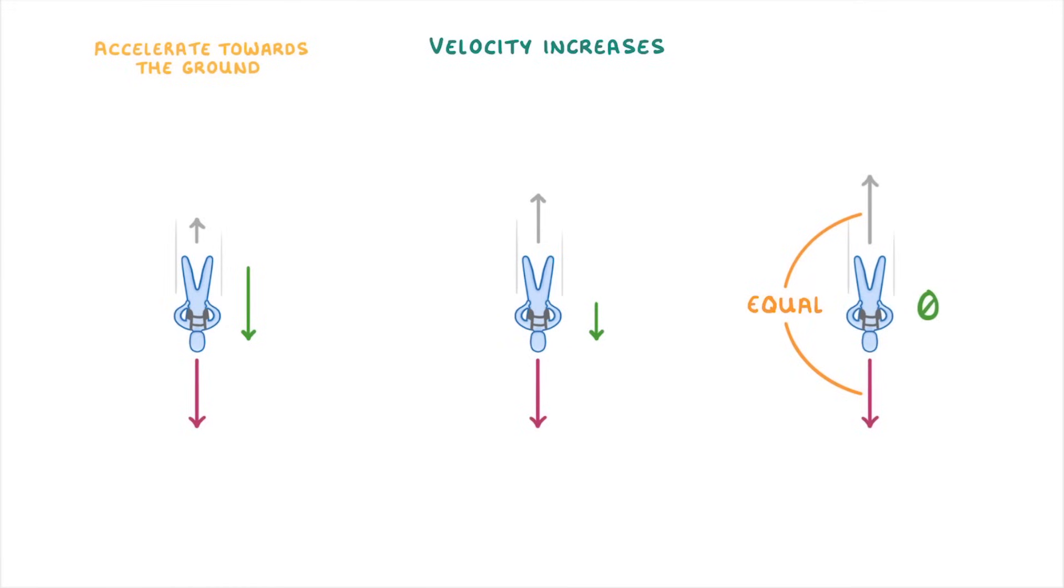As there's no resultant force acting on the object anymore, there can't be any acceleration. And so at this point, we say that the object has reached its terminal velocity. Because it will stay at this velocity, until there's some sudden change, like the opening of a parachute.